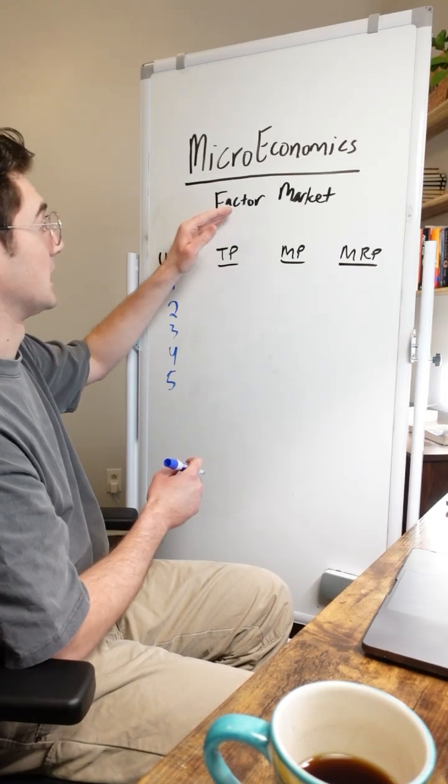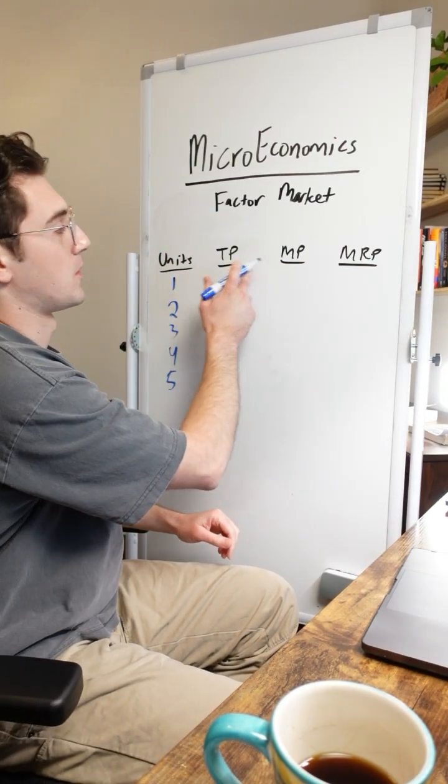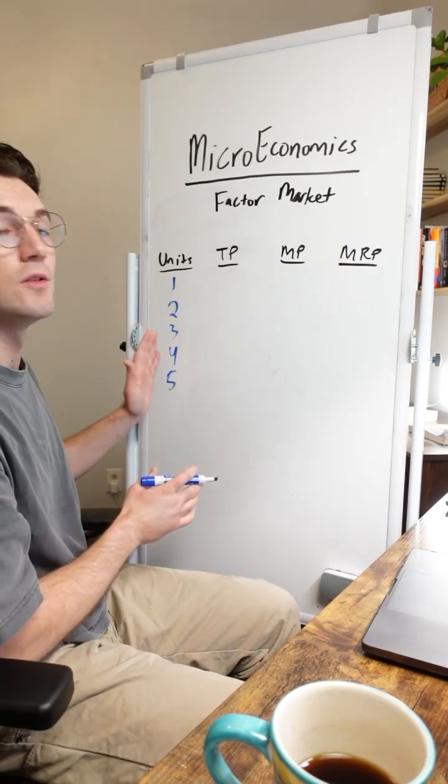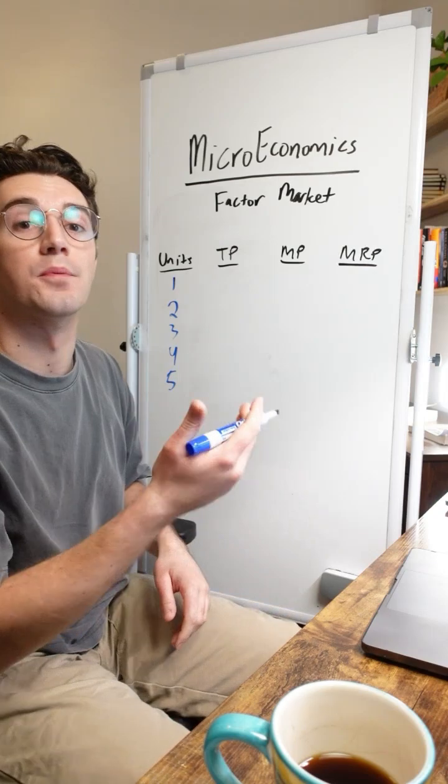They're the number of units of a given factor that are going towards creating product. P is total product, MP is marginal product, MRP is marginal revenue product. These units are not the final output, but rather the factors used to create the product.